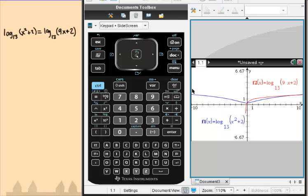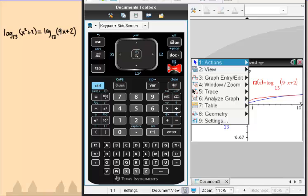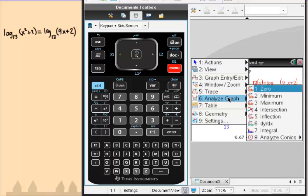What you're going to do is hit the menu key on your calculator, menu. You're going to choose analyze graph, and then choose intersection.